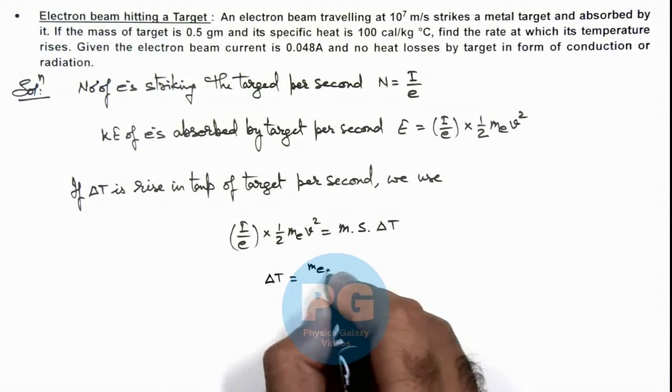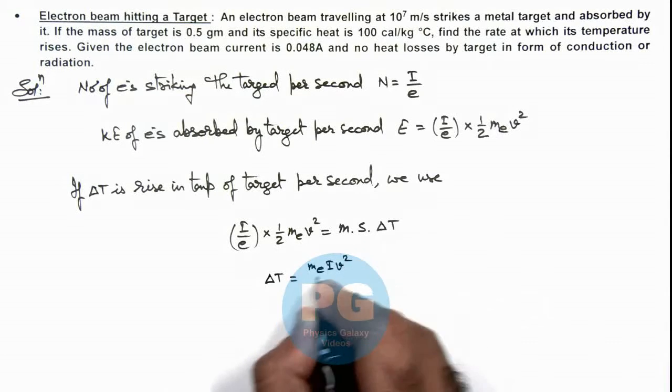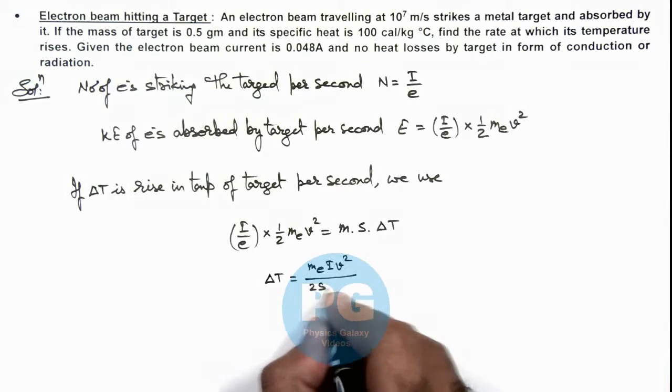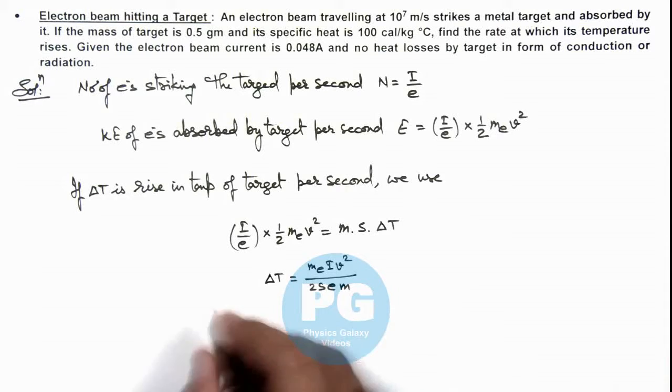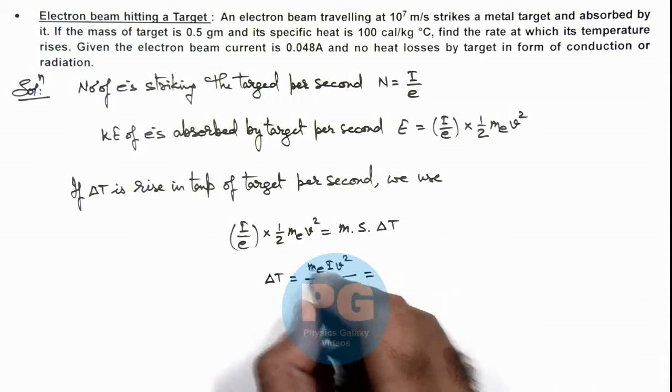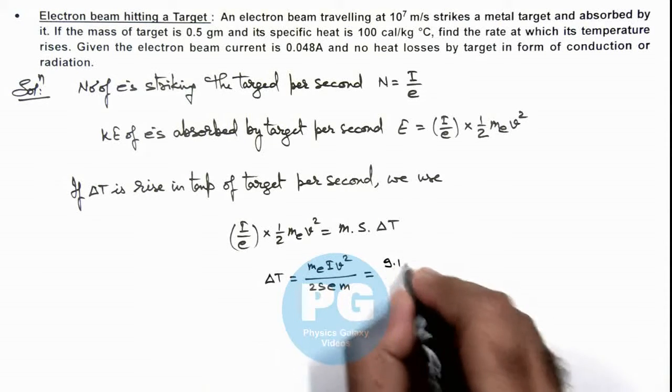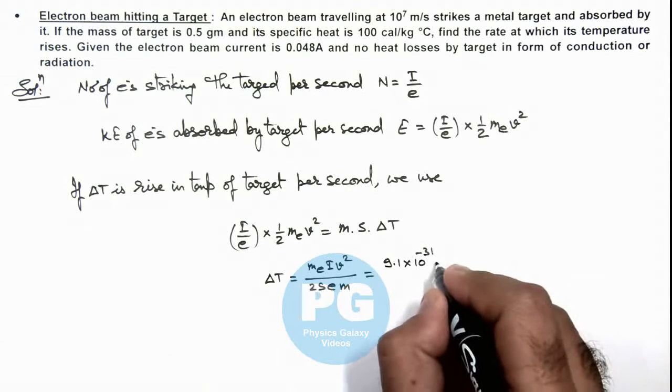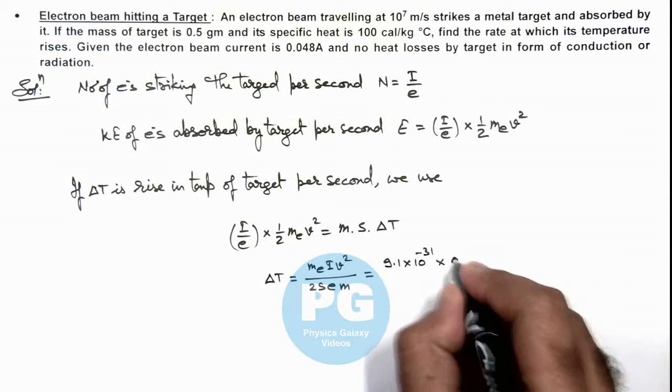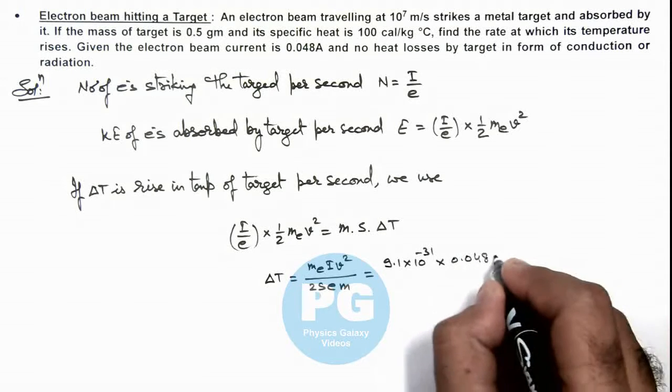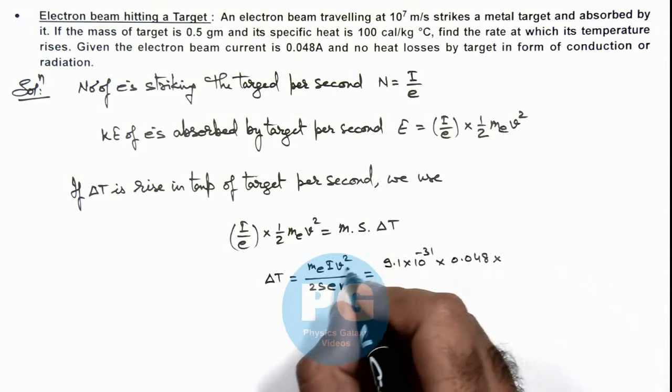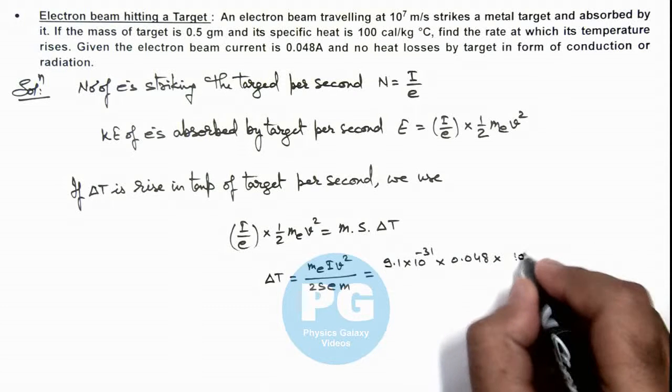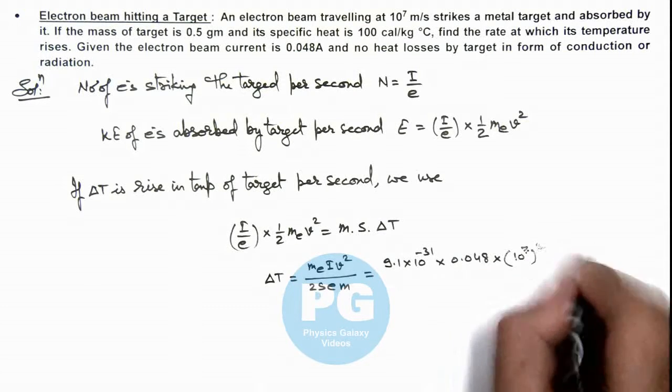Which is m_e I v squared divided by 2 s e m. If we substitute the numerical values, mass of electron we know it is 9.1 into 10 to power minus 31. Beam current here is 0.048 ampere, and speed of electrons we are given as 10 to power 7 meters per second, square of it.